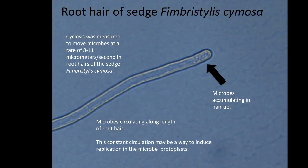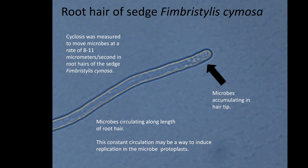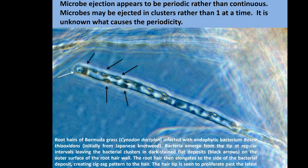At some point when this hair begins to grow, it expands and those microbes are ejected through pores. I do have images of that ejection but don't have them here today. This still image shows a hair, and the darker areas indicate where microbes have been ejected — it's not continuous but periodic, here and here. We think each ejection corresponds to a growth spurt of the hair.